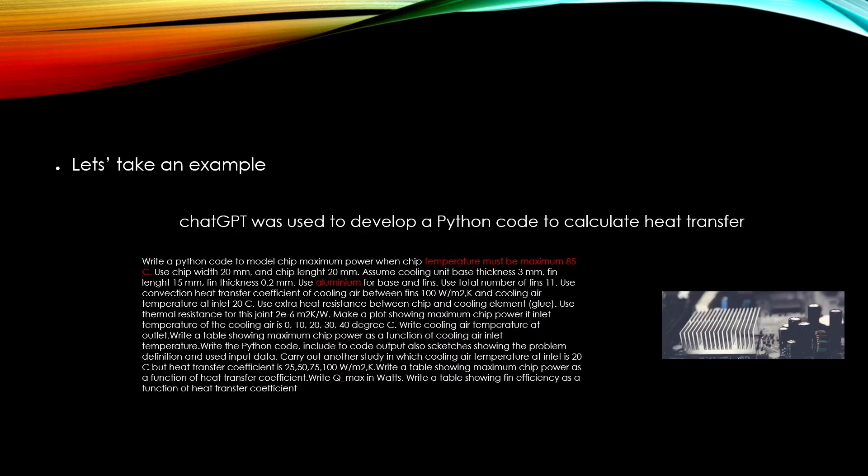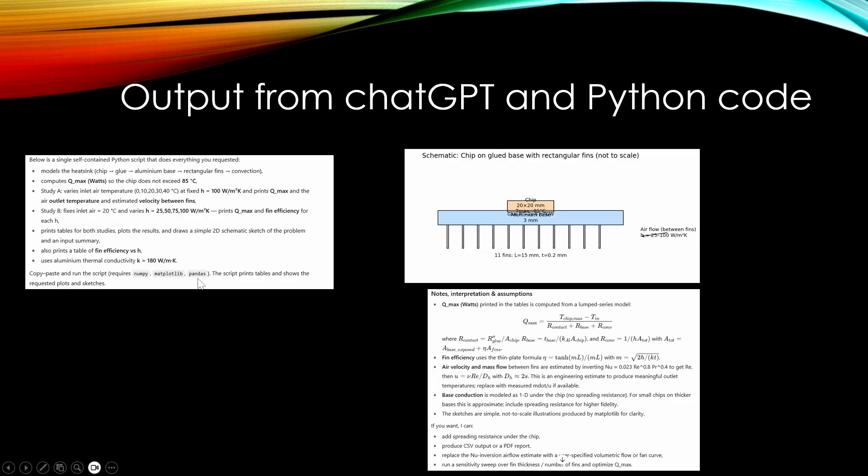Let's take one more example. I sent a request to ChatGPT to develop a Python code to calculate heat transfer in an electronic cooling case. I described that I want that the temperature of the base material is maximum 85 degrees C. And I described the dimensions and material, material was aluminum and a lot of other things. You can read the detailed description here. And what I got from ChatGPT was a very good description of how it understood my task.